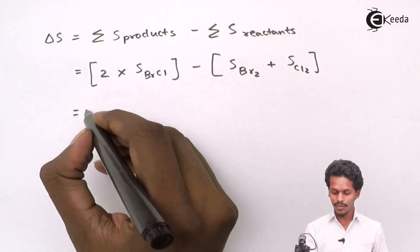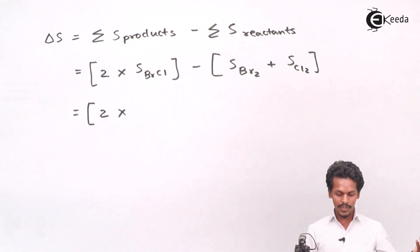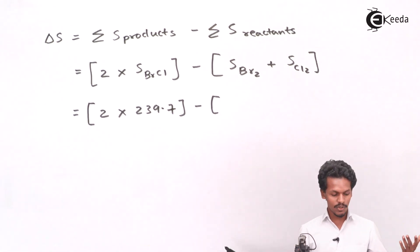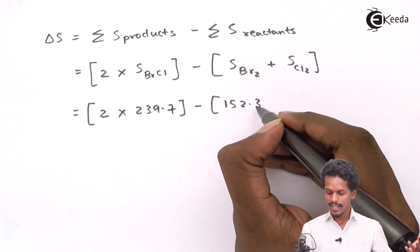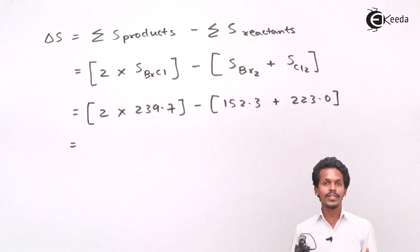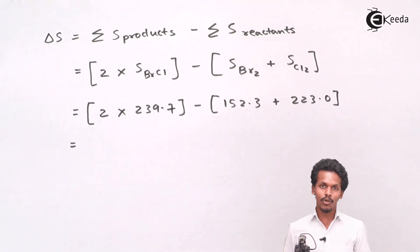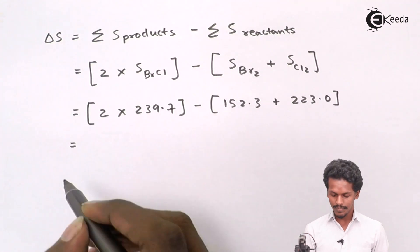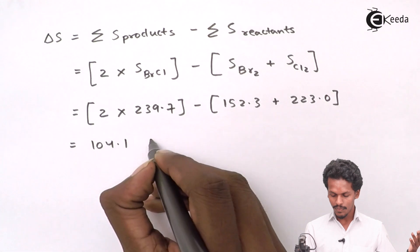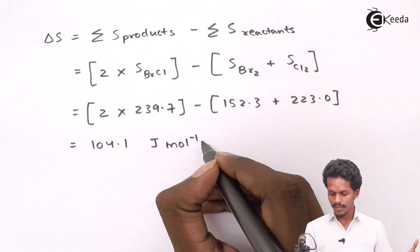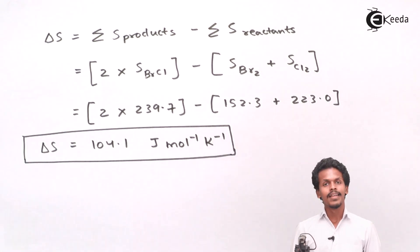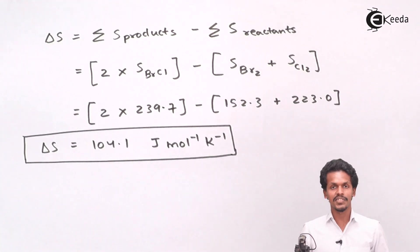Substituting the values: delta S = 2 × 239.7 − 152.3 − 223.0. This gives us a value of 104.1 J/mol/K. So this is the value of delta S that we have calculated.